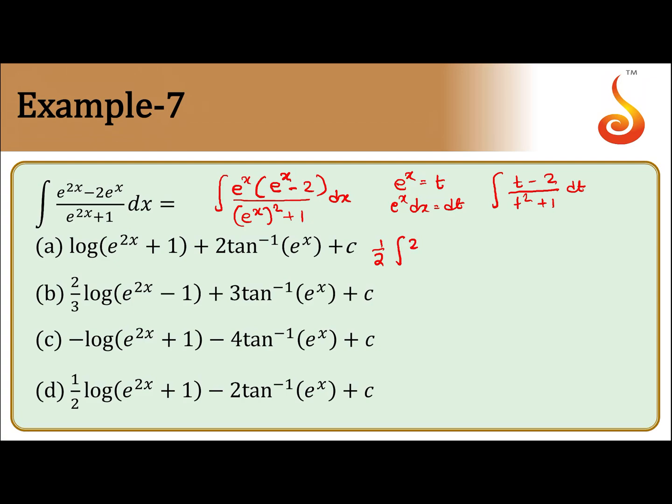Again, we have to bring into standard form. So, 1 by 2 into 2t dt by t square plus 1, minus 2 integral dt by t square plus 1. Both are same. 2 and 2 will cancel. You get the t.